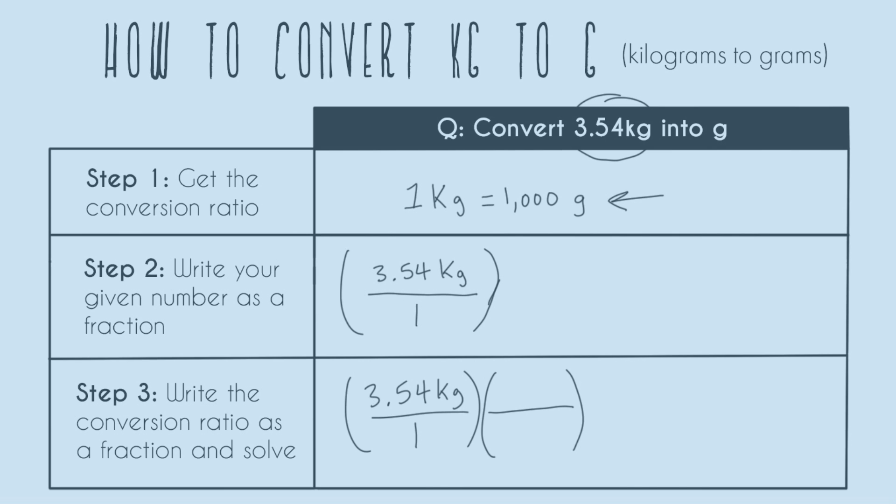We figure that out by looking at our given number, our 3.54 kilograms, and saying okay, how can we cancel out kilograms? Because we want to in our final part of the problem not even have kilograms anymore, that's got to be gone, we've got to have replaced it with grams.